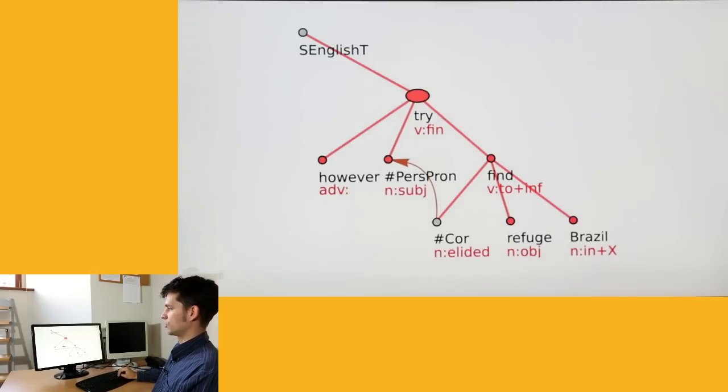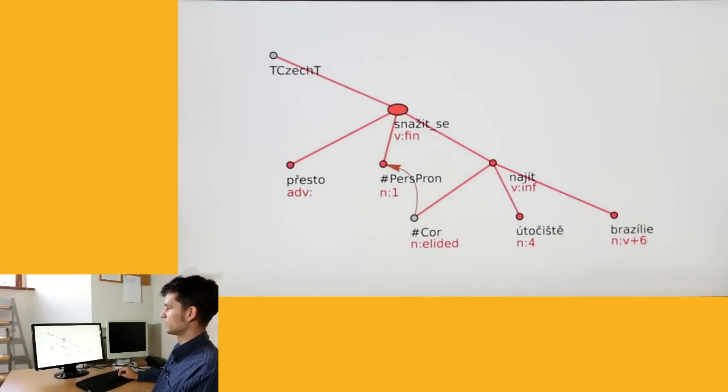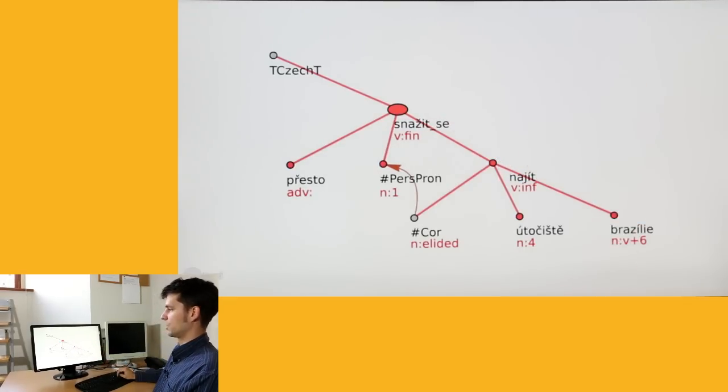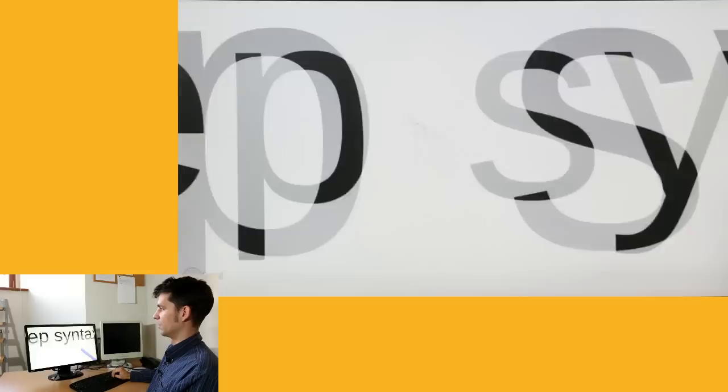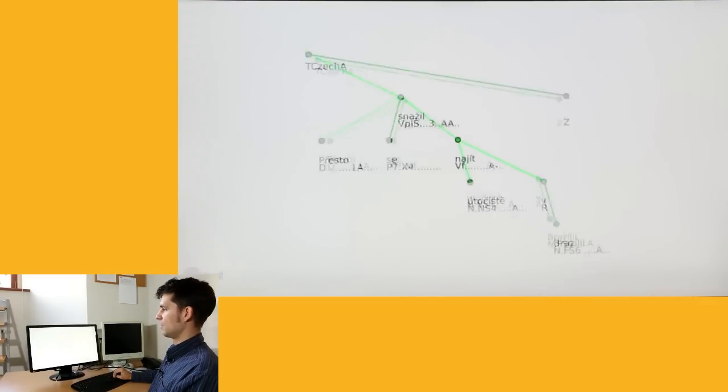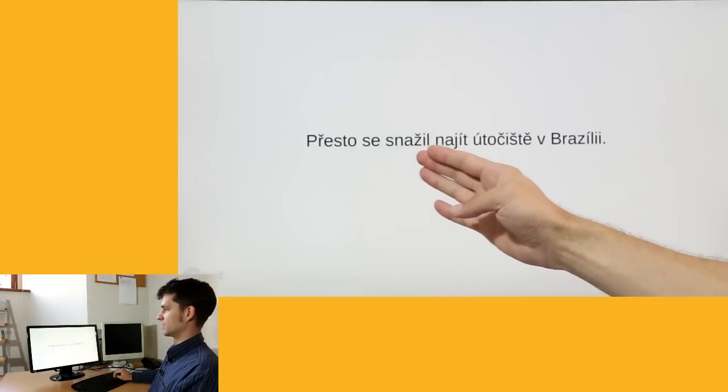This deep syntactic structure is already sufficient for transfer to the other language, so we now replace the labels of English concepts with the labels of Czech concepts, and we then proceed down along the pyramid to get the surface level of syntax, and finally the forms of Czech words in the Czech sentence.